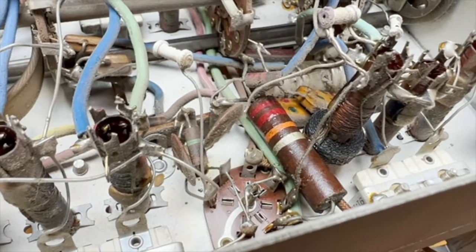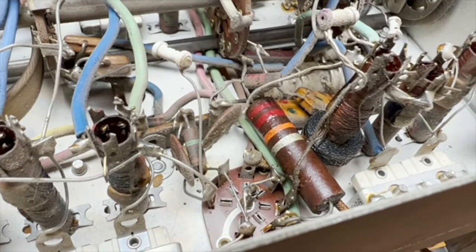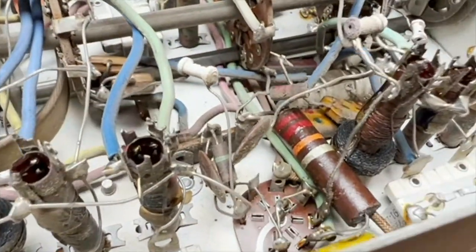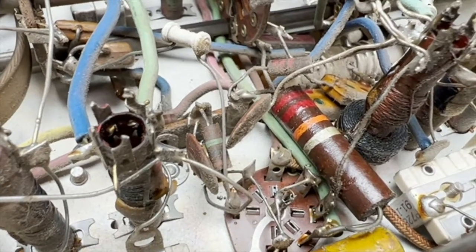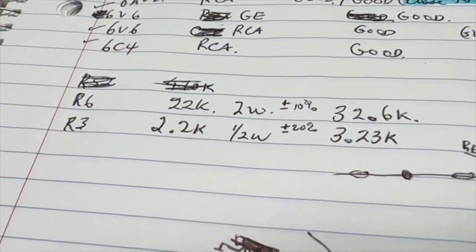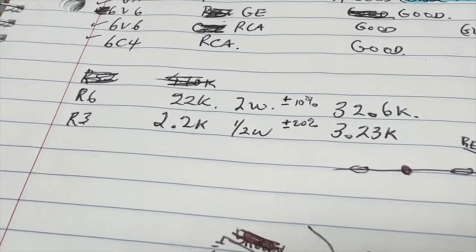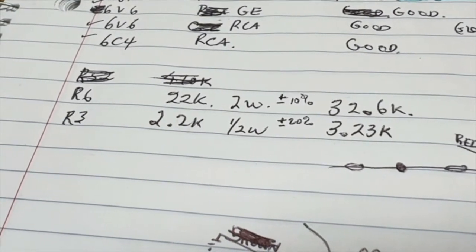I usually start at one end and work methodically towards the other. To make errors less likely, I'll make a diagram so it's easier to put things back. And as it's happened, the first two resistors I've checked, which is that large one on the right and that smaller one in the middle, they're both 50% out of value. I don't replace if something is within tolerance or if it's almost within tolerance. If you look at R6, it is almost 50% out and that's unacceptable.